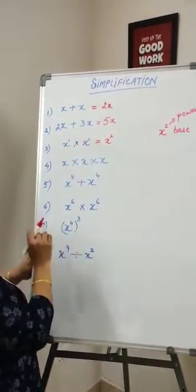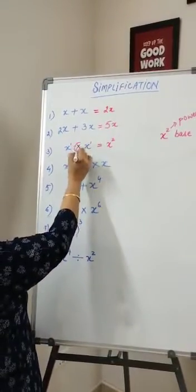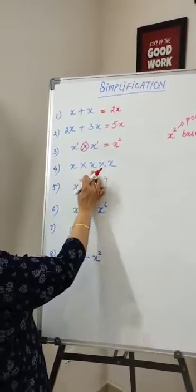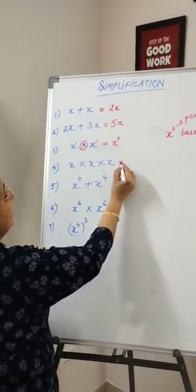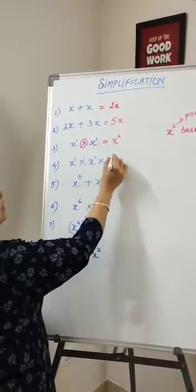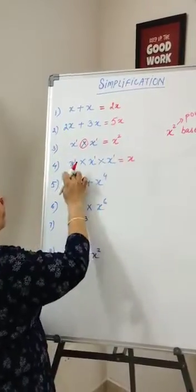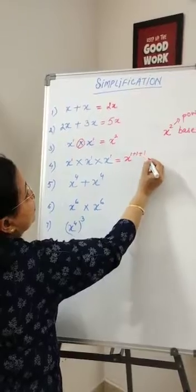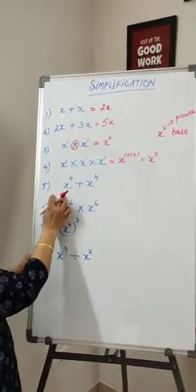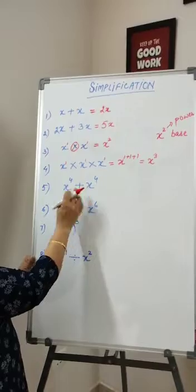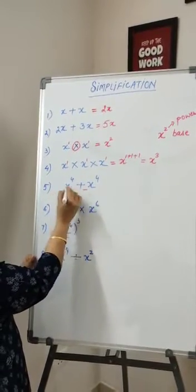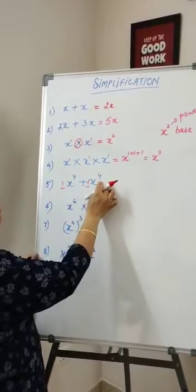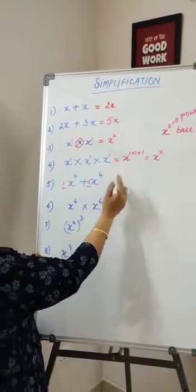When x multiplied by x, the answer is x squared, because in multiplication the powers are added — each x has power 1. x times x times x: we add all the powers, so since the bases are the same, we add the powers and the answer is x cubed.